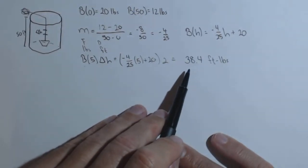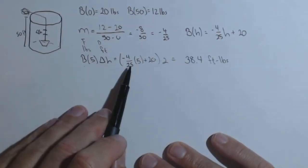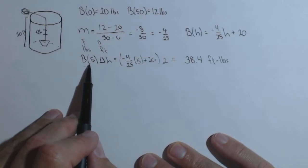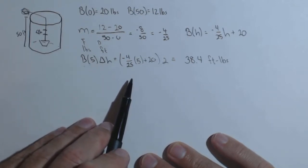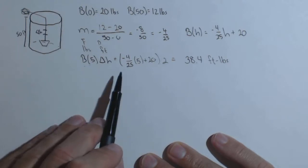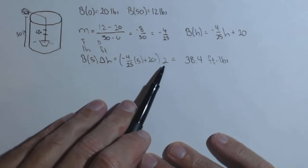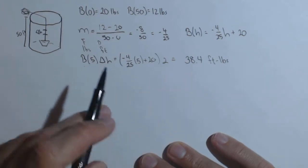So what that tells us is if the force stays constant from 5 feet to 7 feet, so we're moving this from 5 feet high to 7 feet high, if it were to stay constant with the value that it was at 5 feet, the work to move those 2 feet would be 38.4 foot-pounds.